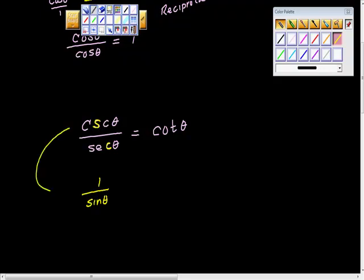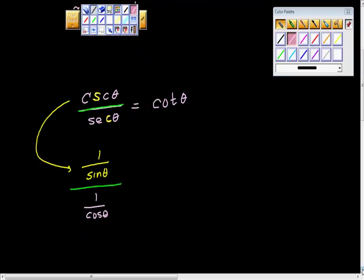1 over sine theta is cosecant theta. This solidus or fraction bar right here is this one. And I know that secant of theta is 1 over cosine theta.